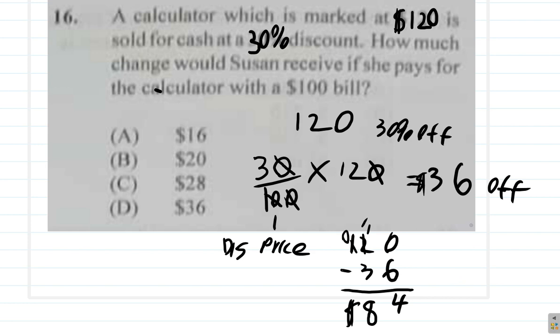If Susan gives $100, her change should be 100 minus 84. Well, I could consider this as 100 minus 80 and then minus 4 more. If you have 100 minus 80, you'll have 20 left.